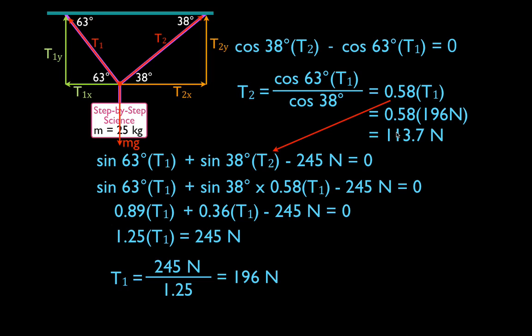And that is the end of our problem. We went through those steps: we drew the forces, we broke the forces down, we wrote the terms, we substituted in, we used the equation to solve for T2, then to solve for T1, and then went back and solved for T2 again. If you follow those steps, it's pretty straightforward — it's a little bit of algebra. Draw your pictures, take your time, and it works out pretty well. Thank you very much for watching. I hope you found that helpful.